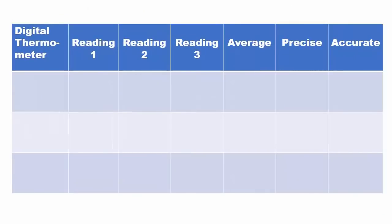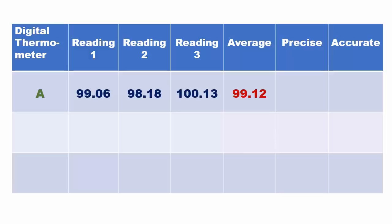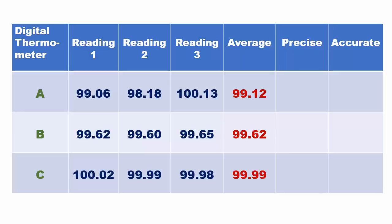The three values of thermometer A are 99.06, 98.18, and 100.13. The average of three values is 99.12. The three values of thermometer B are 99.62, 99.60, and 99.65. The average of three values is 99.62. The three values of thermometer C are 100.02, 99.99, and 99.98. The average of three values is 99.99.